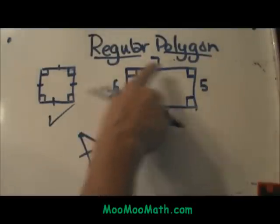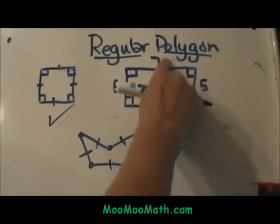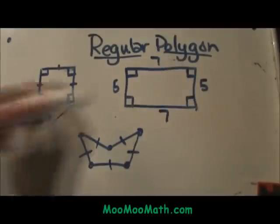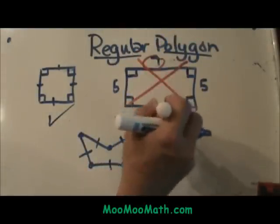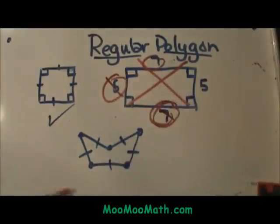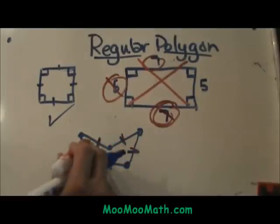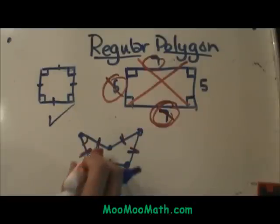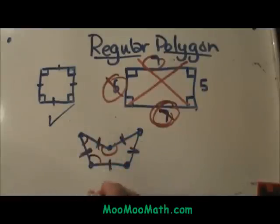This one has four right angles so it is looking good, but it only has these two sides of five and these two sides of seven, so this one is not a regular polygon because two sides are different — a side of five and a side of seven. Now let's look at this third one at the bottom. We have all five sides the same but notice we have an acute angle here and a different angle here and a really large angle here, so these angles are not the same.